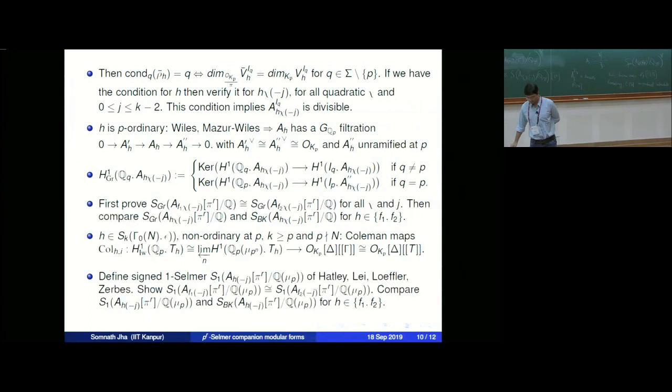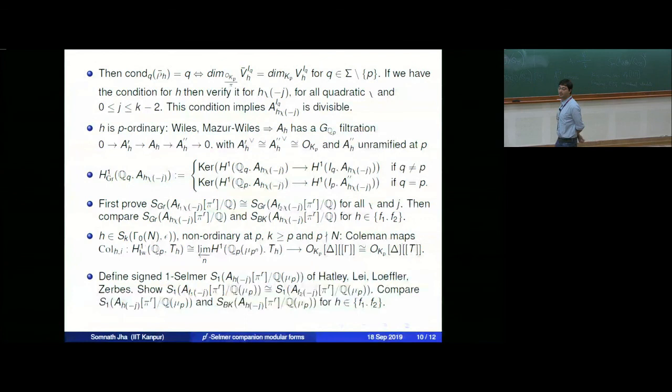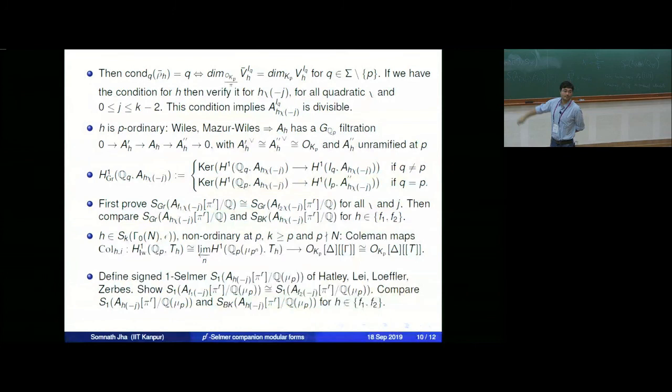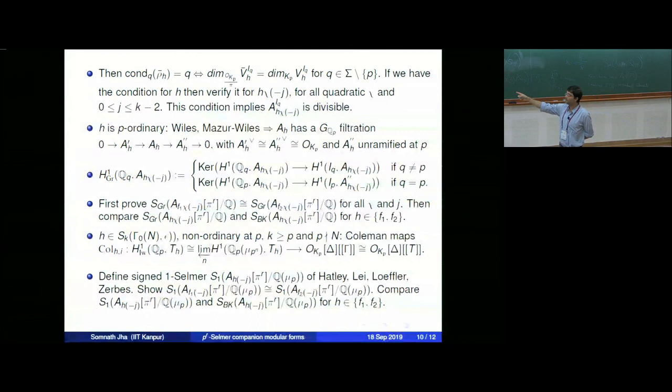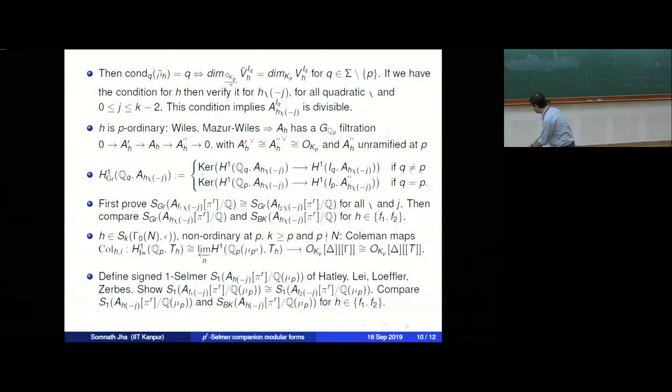We use results of Lei-Loeffler-Zerbes. The main idea is that the Bloch-Kato condition is given by the kernel of the dual exponential (Perrin-Riou's exponential star) map. In one of the Lei-Loeffler-Zerbes papers, they connect the signed Selmer condition with this dual exponential map. Using Coleman maps from the Iwasawa cohomology (inverse limit of H^1(Q_p(μ_{p^n}), T_H)) to the Iwasawa algebra, something is in the kernel of the Coleman map if and only if it is in the kernel of Perrin-Riou's dual exponential map.